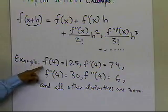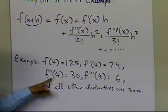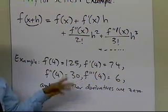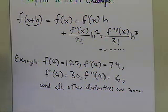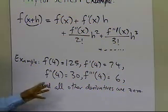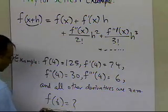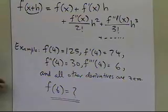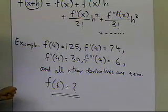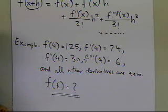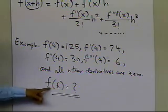So you are given the value of the function at 4, the first derivative at 4, second derivative at 4, and third derivative at 4, and then all the other derivatives — the fourth, fifth, sixth, and beyond — are all given to be 0. What is asked is to find the value of the function at 6. The fine print is that all these derivatives are continuous and exist between x equal to 4 and x equal to 6, which is the only way you can apply Taylor's theorem.